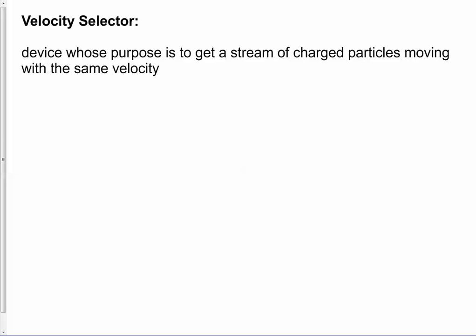A velocity selector is a device that's used in other devices, and this is what it does: it gets a stream of charged particles of the same velocity. Let me explain what the issue is.